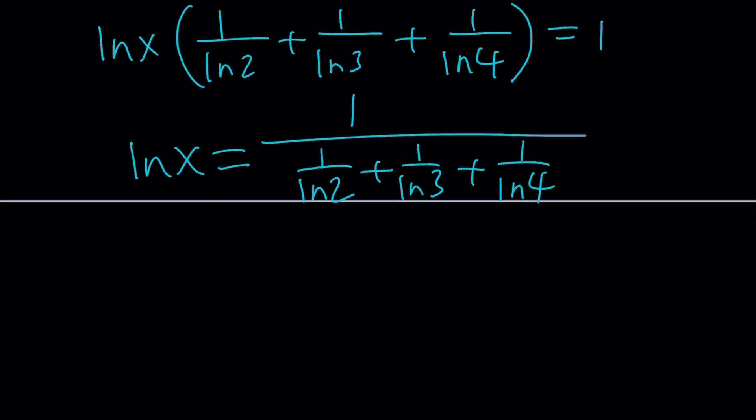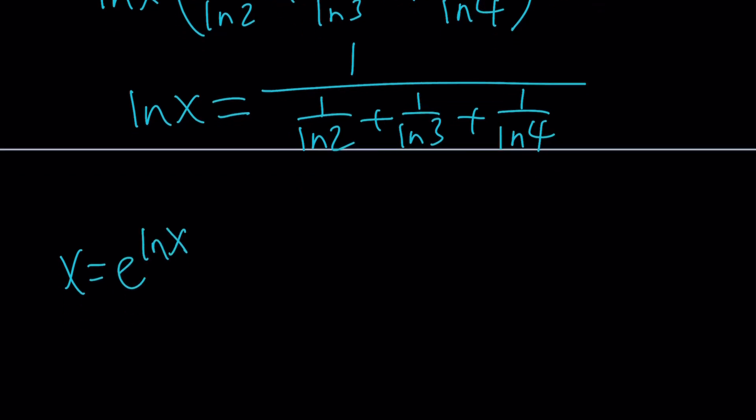This is ln x. I do need x. And remember the famous identity. We just talked about it right this morning. x is e to the ln x. So all I have to do is e to the both sides, and we're good to go. So x equals e to the power 1 over ln 2.